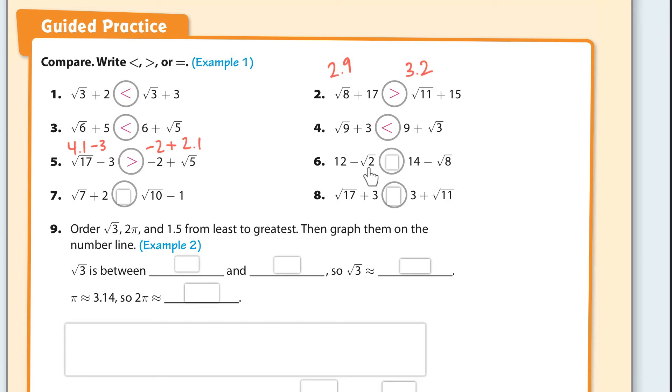So this one, 12 minus square root of two. I think that's like 1.14. So this is 12 minus 1.14 would be 10.86. And then 14 minus the square root of 8. The square root of 8 should be almost 3, let's call it 2.8. It's 14 minus 3 is 11. So I think it's going to be open to the right. Let's see. Open to the right.